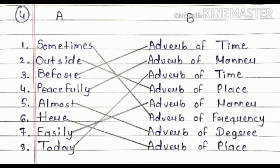Now peacefully, peacefully, adverb of manner. Almost, almost, what will happen? Adverb of degree. Sixth is here. So it suggests a place, so it will come adverb of place.